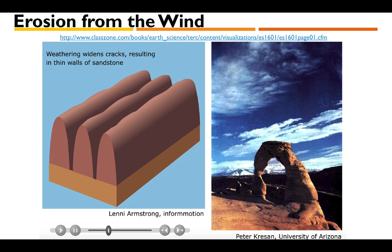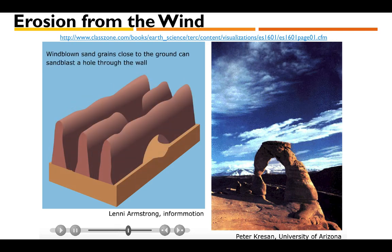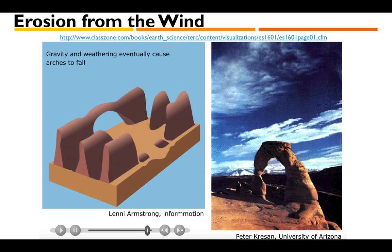Over time, weathering and erosion break the rock down and reshape it into something completely different than what you had originally — that's erosion reshaping the surface of the earth. These processes take a very long time; it doesn't happen as quickly as it did in that animation. These changes can take hundreds to thousands of years to actually take place.